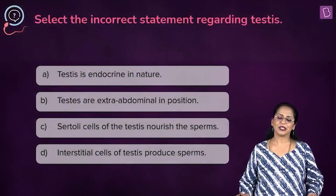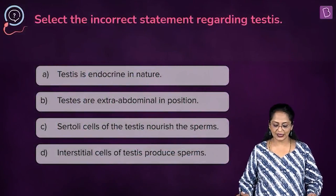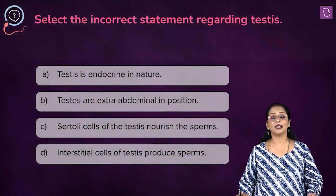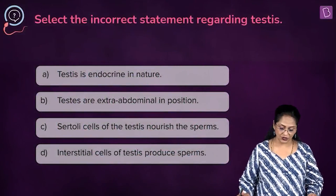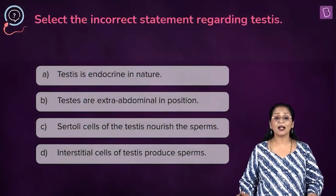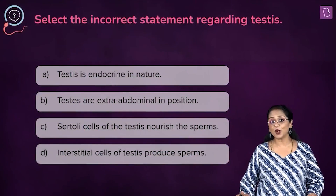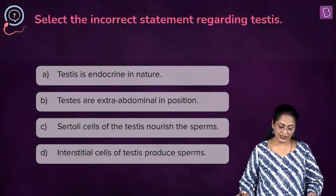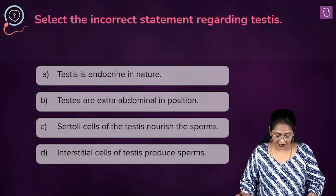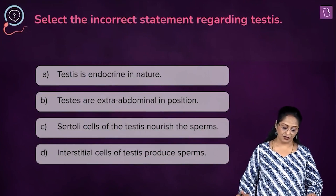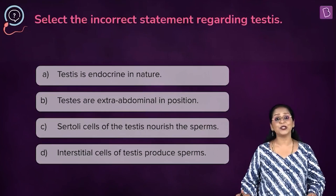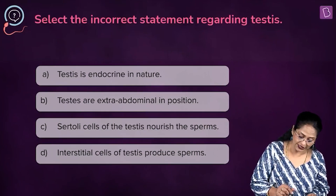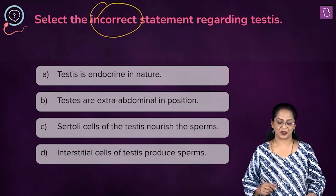Next question: select the incorrect statement regarding the testis. A. Testis is endocrine in nature. B. Testis are extra-abdominal in position. C. Sertoli cells of the testis nourish the sperms. D. Interstitial cells of the testis produce sperms. We need to select the incorrect statement.